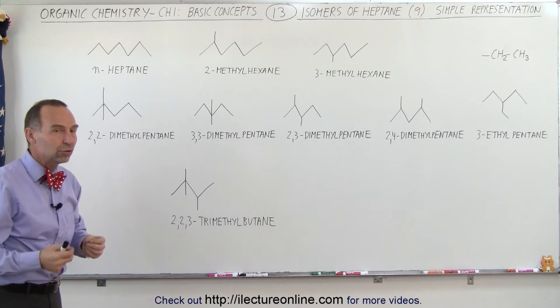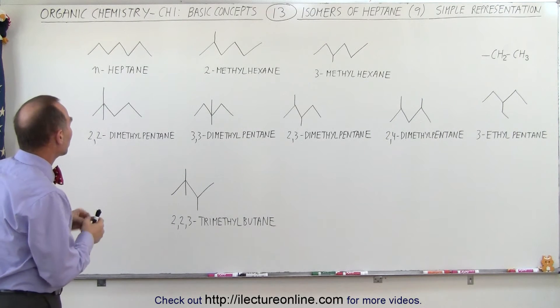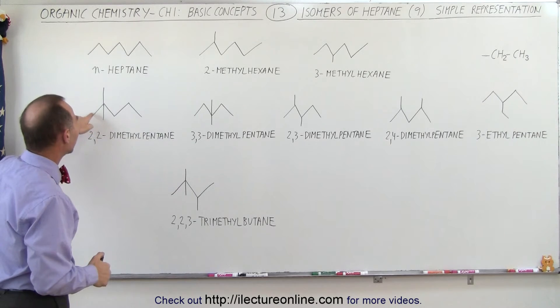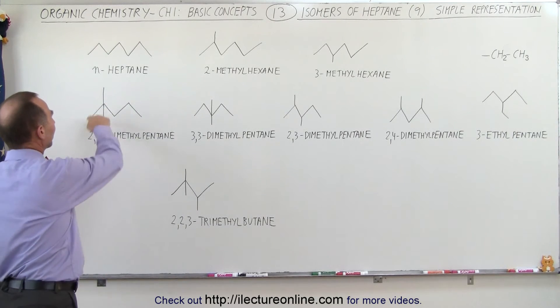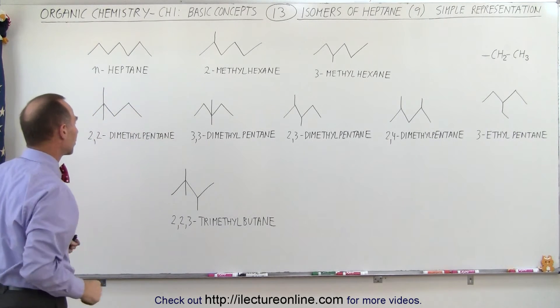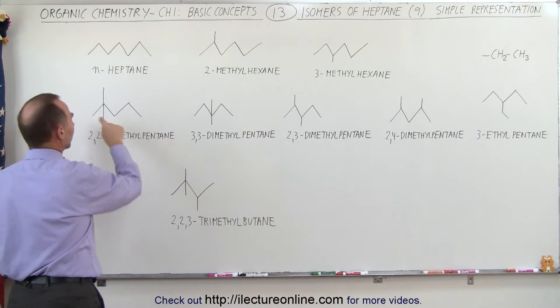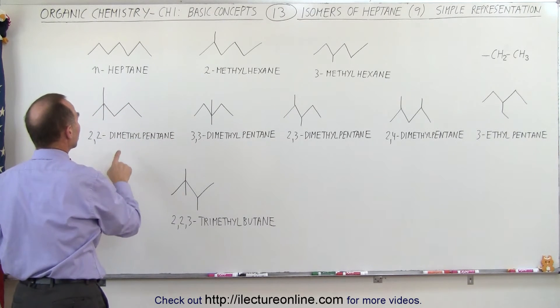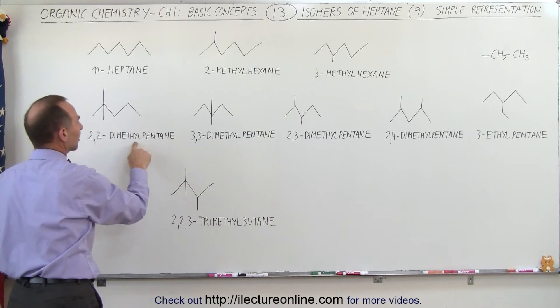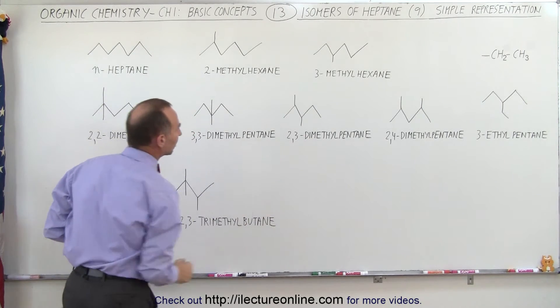Next, we're going to take two carbons away from the chain, so we only end up with five. Again, five is an odd number, so we have these two complete triangular structures. We call it pentane because there's five carbons in the chain, but now there's two methyl groups, so we call it dimethyl.